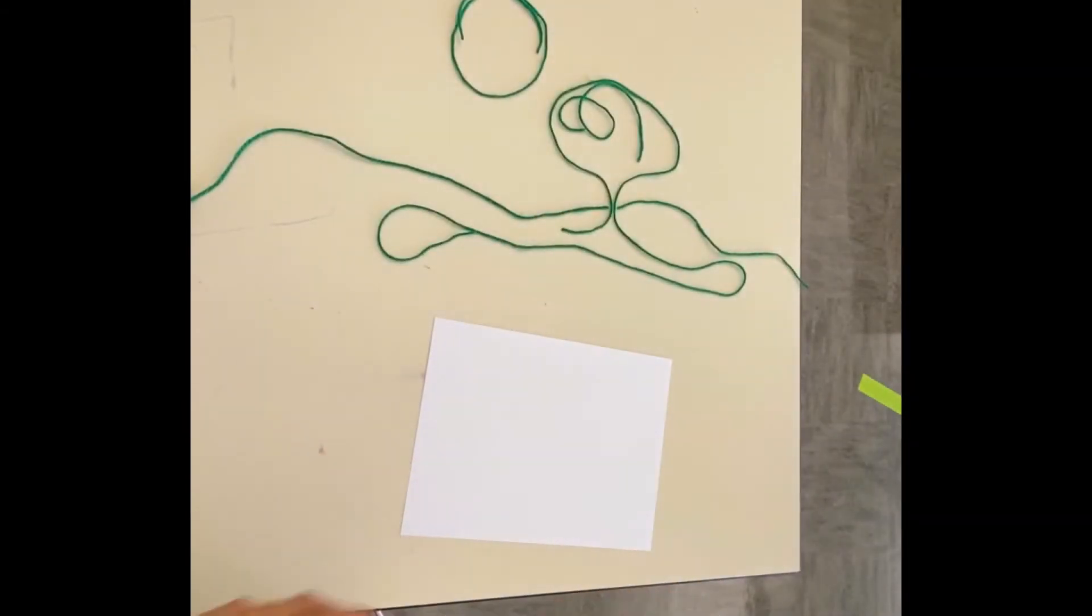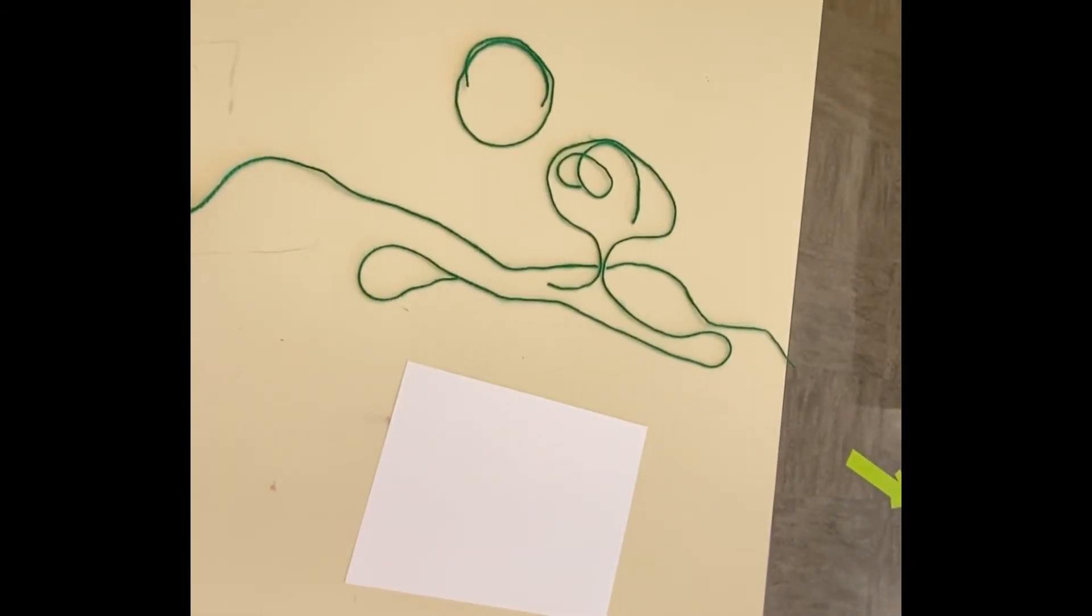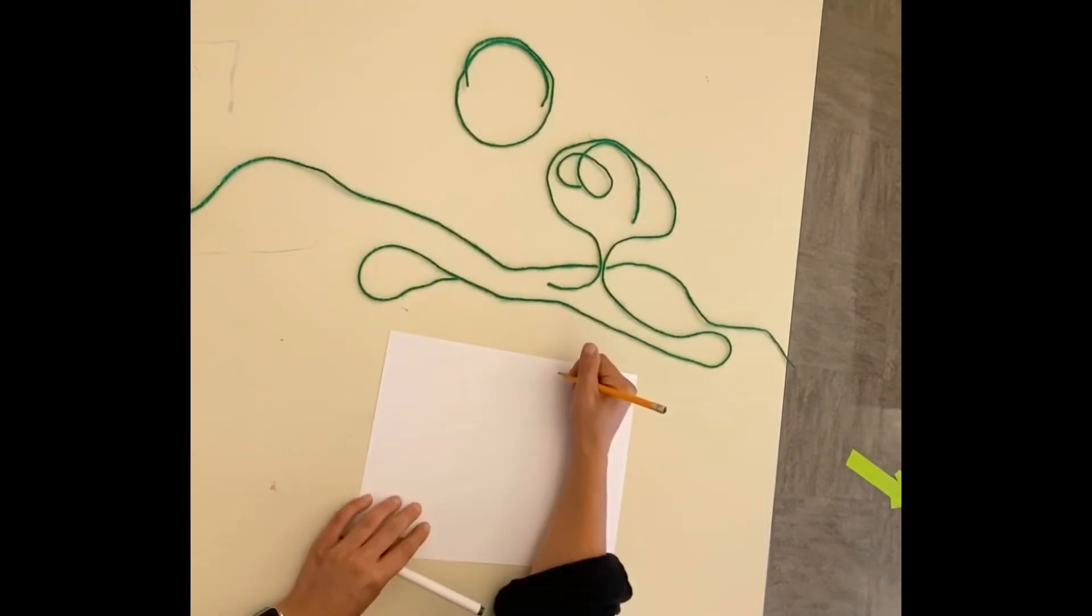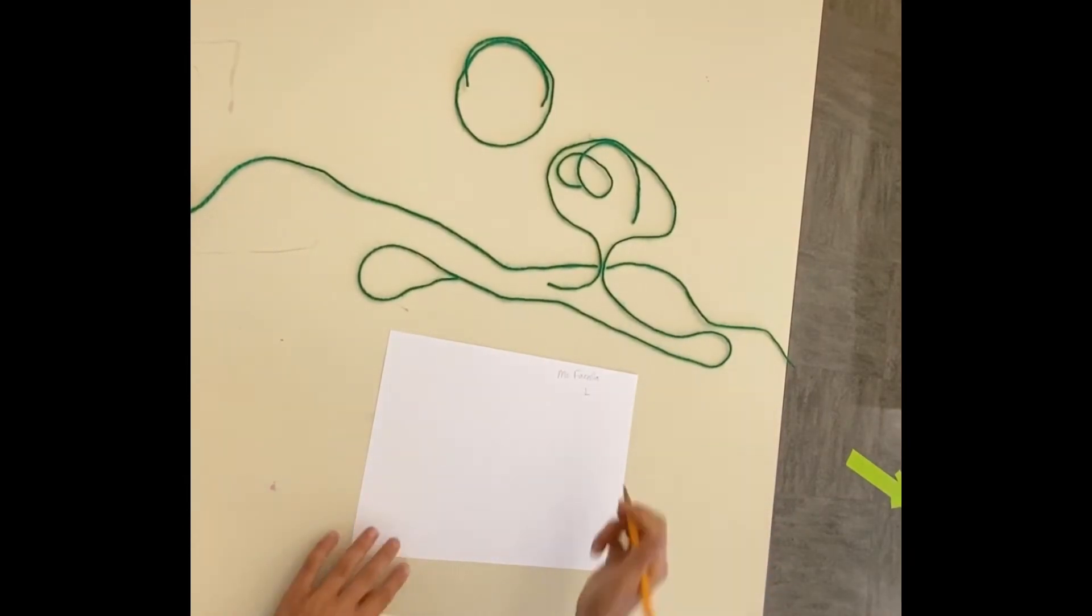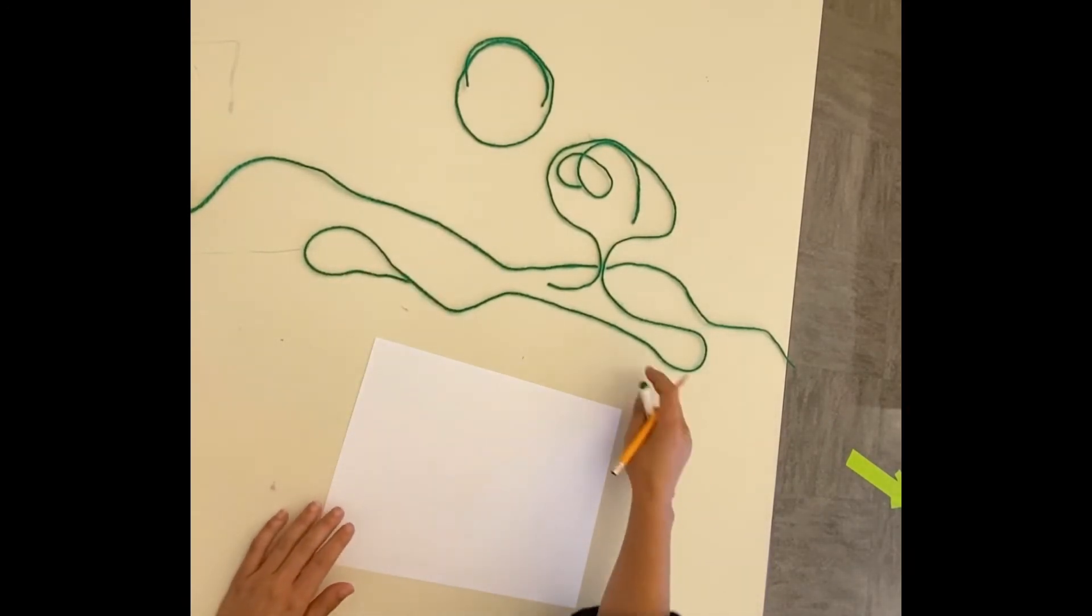For this next step, you will need your temporary drawing in string or yarn, a piece of paper, something to draw with or write with, and definitely a pencil to write your name on the back. The first thing I'm doing is turning my paper over and writing my name and class code if you're in school. Then flip your paper over so we're ready to begin our drawing.